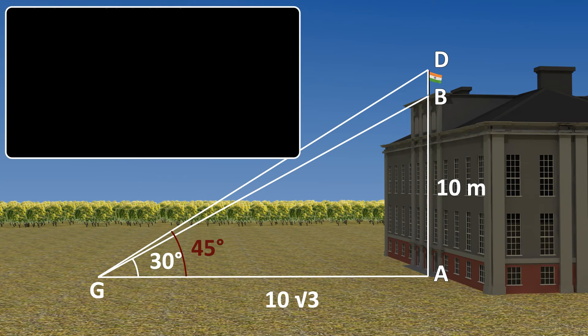So, the distance of the building from the point G is 10 square root 3 meters is equal to 17.32 meters.